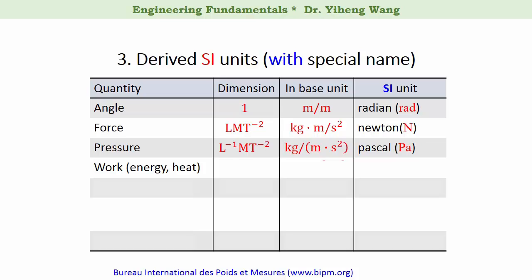Work, energy, heat are essentially the same physical quantity, which can be defined in a way as force times distance. Therefore its dimension is the dimension of the force times length. This is its unit given in base units, and this unit has the name of joule.